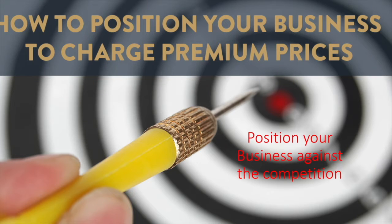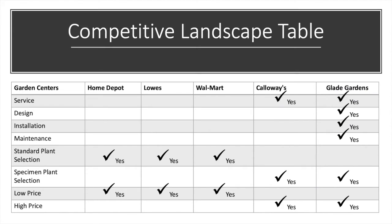You can use a combination of both product and service pricing. To maintain a high price, you need to position against your competition so you can charge a premium price. An excellent way to do that is the competitive landscape table, which maps your competition and your critical success factors.